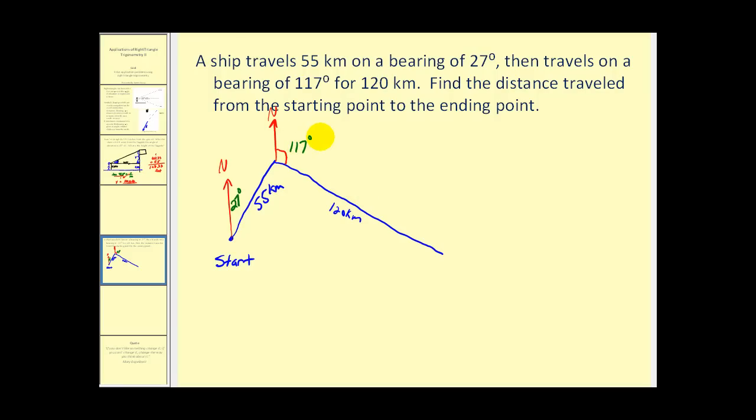The question is, what is the distance from this point to the starting point? So we'll call this x. We need to figure out some more angles for this triangle.